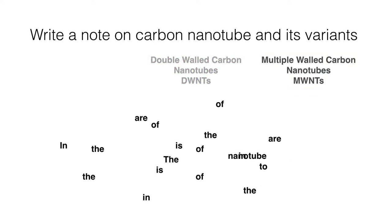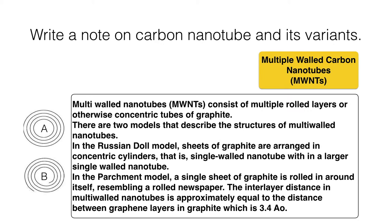Multi-wall carbon nanotubes consist of multiple rolled layers of concentric tubes of graphite. There are two different models that describe the structure of multi-wall carbon nanotubes. In the Russian doll model, sheets of graphite are arranged in concentric cylinders — that is, a single-wall nanotube within a larger single-wall nanotube.